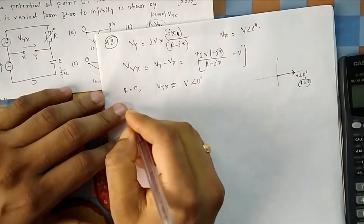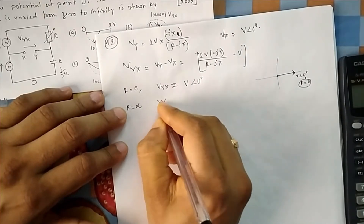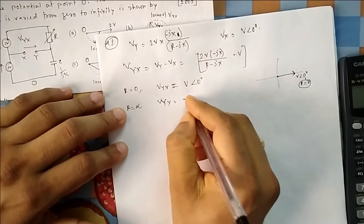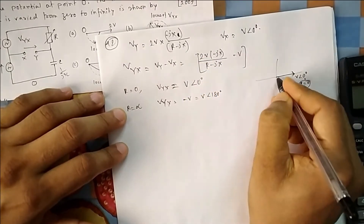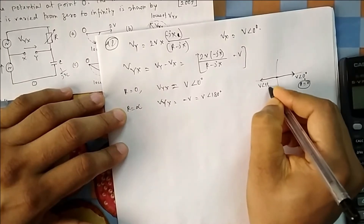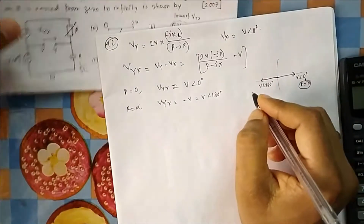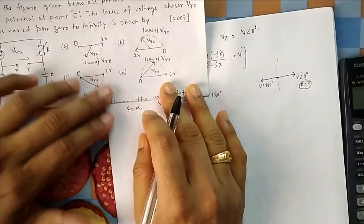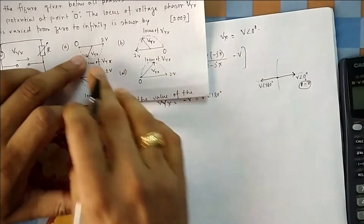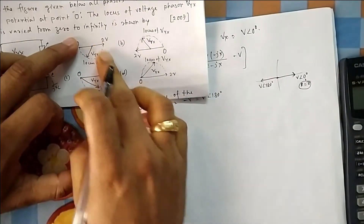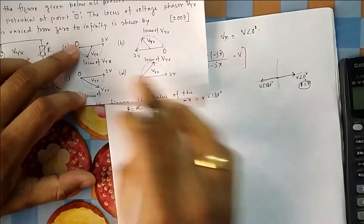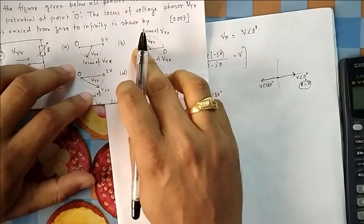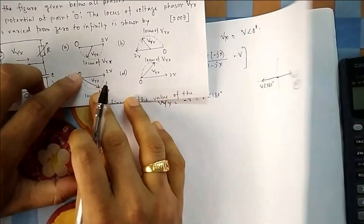At R equal to infinity, the first term goes to zero, so Vyx equals minus V, which is V∠180°. So the phasor moves from V∠0° to V∠180°. Looking at the options to see which one has one extreme point on this side and the other extreme point on that side — and where the locus passes the length is 2V at both extremes.